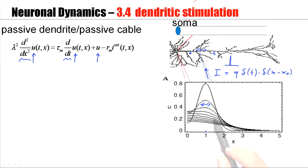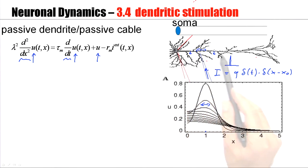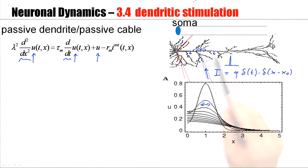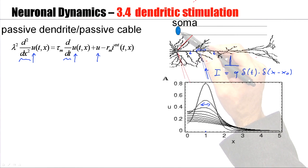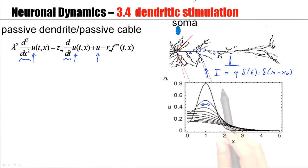For this solution of the differential equation, the dendrite is approximated as one linear cable which is very long — formally, infinitely long. But on the soma end, it is closed. This would be where action potentials are generated. Here we are interested just in the dendritic stimulation, so we close it there. A pulse injected here will give rise to a very sharp peak at the beginning, but then it will decrease and disappear over time.